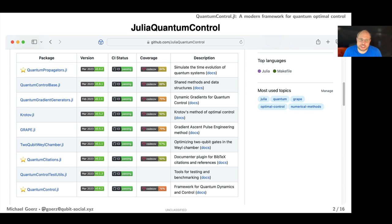There's actually a whole bunch of packages in this framework, but the two that are at the highest level are the QuantumPropagators.jl package which simulates quantum dynamics, and QuantumControl.jl which does the actual quantum control and currently has an implementation of GRAPE and Krotov's method.